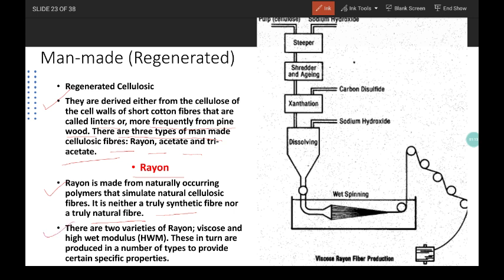There are 2 varieties of rayon: viscose rayon and high wet modulus. These in turn are produced in a number of types to provide certain specific properties.